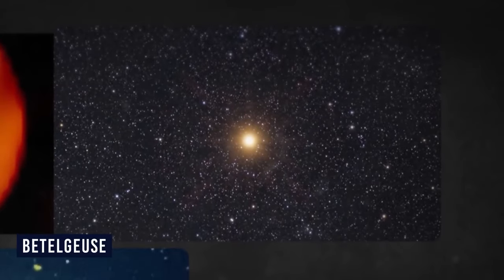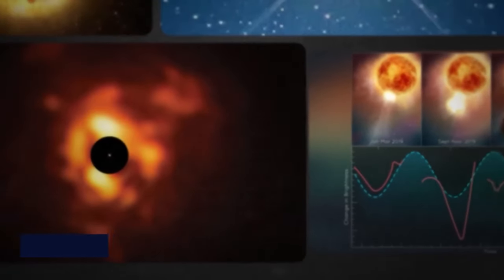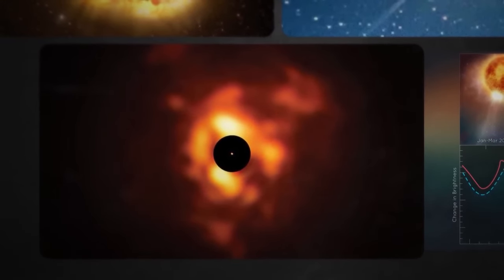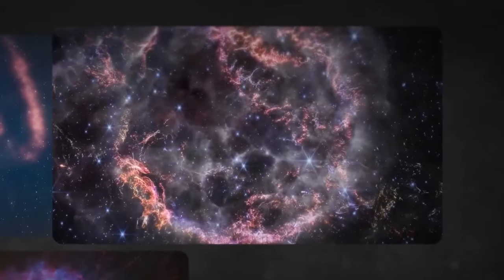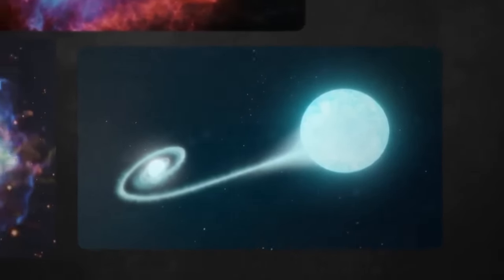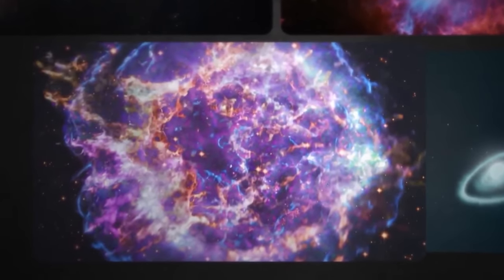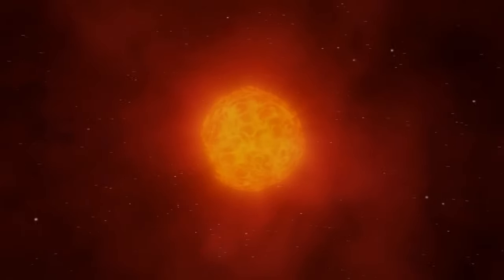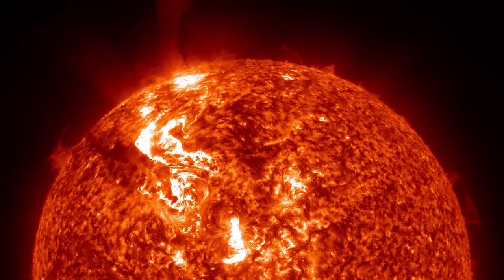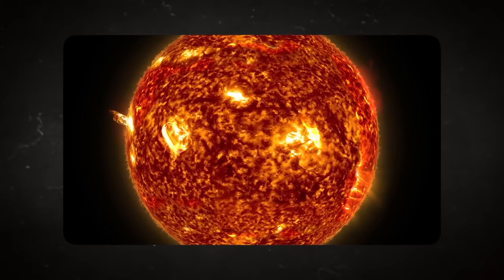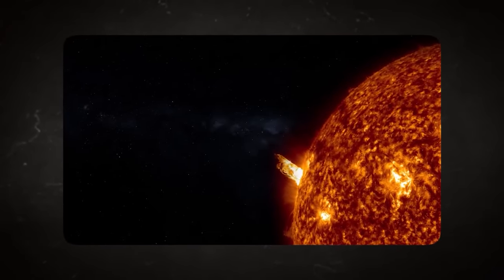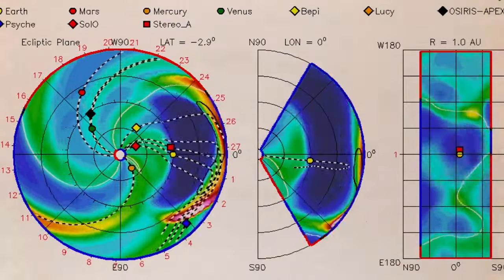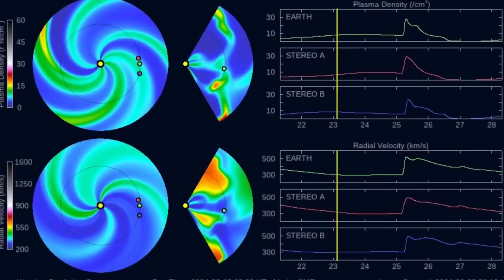Betelgeuse's life cycle unfolds over a vast span of millions of years, starting from its humble beginnings within a dense molecular cloud composed of gas and dust. Deep within this cloud, gravitational forces initiate the coalescence of matter, giving rise to the budding core of Betelgeuse. As time progresses, the core accumulates more mass, gradually maturing into a young and hot star known as a protostar. Throughout this phase, Betelgeuse remains shrouded in an opaque cocoon of gas and dust. With the continued accumulation of mass, the temperature and pressure within the core rises. Eventually, these conditions become conducive to the fusion of hydrogen atoms into helium. This marks the star's entry into the main sequence phase, characterized by a delicate balance between the inward pull of gravity and the outward pressure from nuclear fusion. Betelgeuse spends millions of years in the stable main sequence phase, where it primarily burns hydrogen at its core, sustaining its luminosity and overall stability.